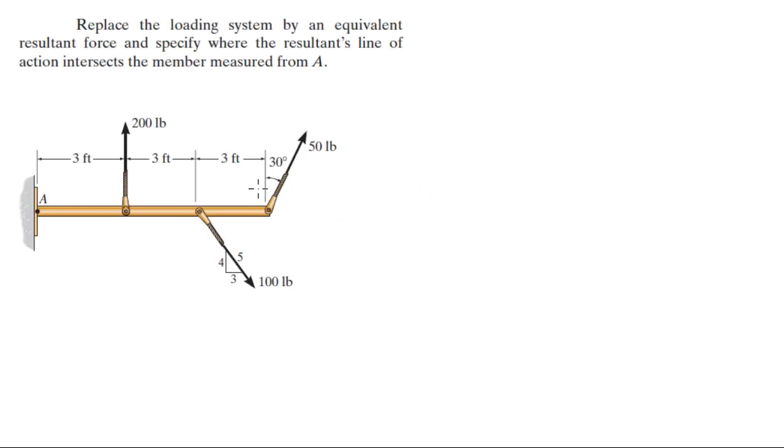For more videos visit ForTheSakeOfEducation.com. Let's do this problem where it says replace the loading system by an equivalent resultant force and specify where the resultant's line of action intersects the member measured from point A.